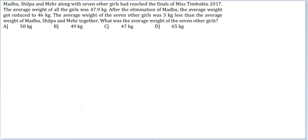Let's look at this question. Madhu, Shilpa and Meher along with 7 other girls had reached the finals of Miss Timbuktu 2017. The average weight of all the girls was 47.9. After the elimination of Madhu, the average weight got reduced to 46. The average weight of the 7 other girls was 3 kg less than the average weight of Madhu, Shilpa and Meher together. What was the average weight of the 7 other girls?